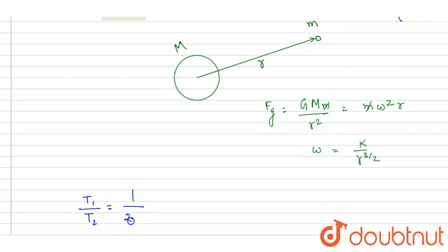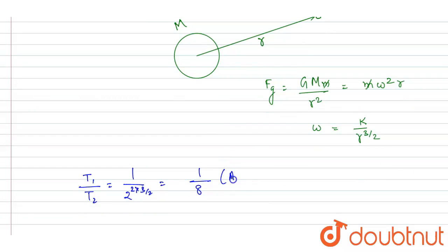So from here I can write down T₁ by T₂ equals 2³ that is 1 by 8. And this will be the answer of this question.